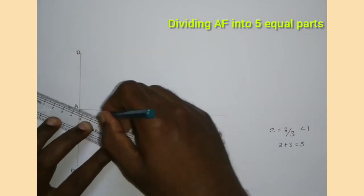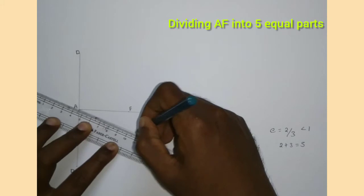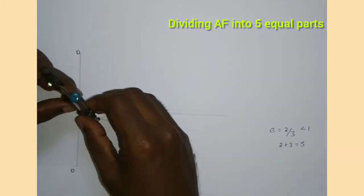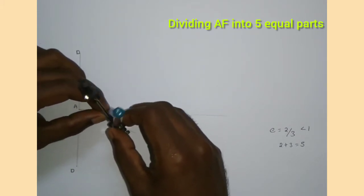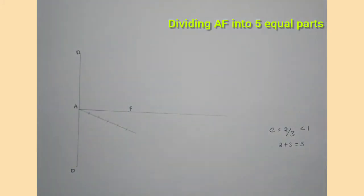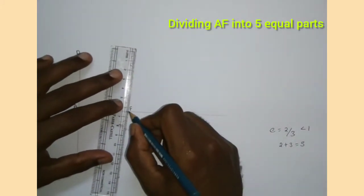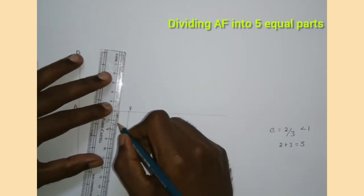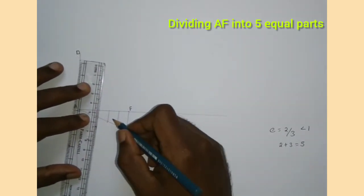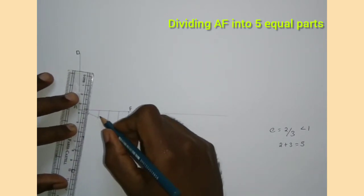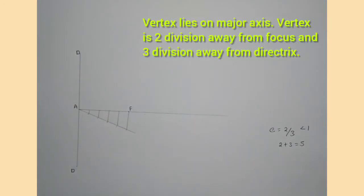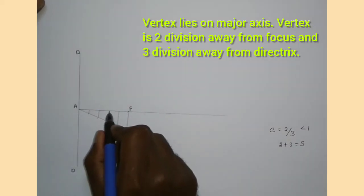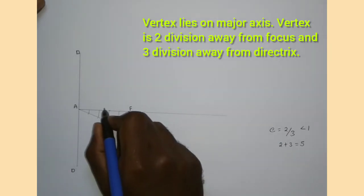This is for finding the vertex of the ellipse. So I am drawing an inclined line and cutting 5 equidistant arcs for dividing AF into 5 equal parts. I am joining the last arc with F and drawing parallel lines from the other points. So now AF is divided into 5 equal parts. I am going to mark the vertex of the ellipse, which is 2 divisions away from the focus, and I am marking it as V.